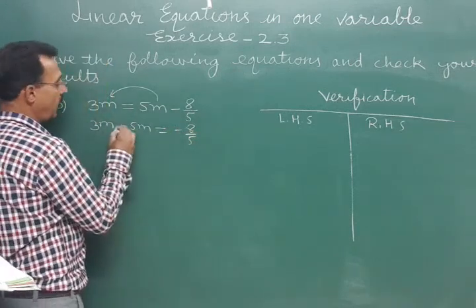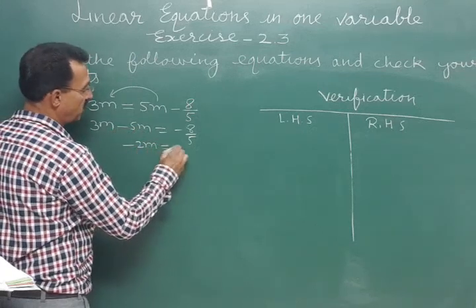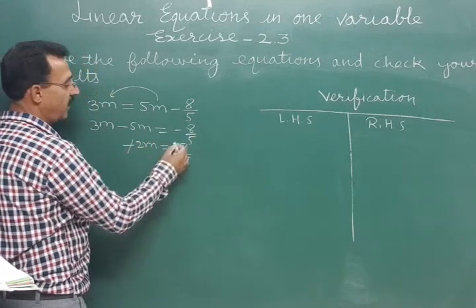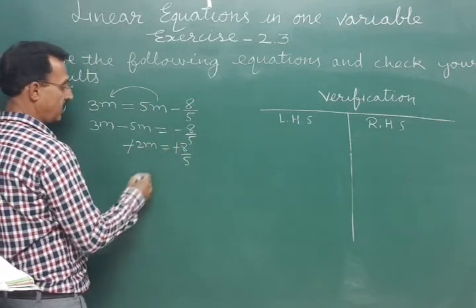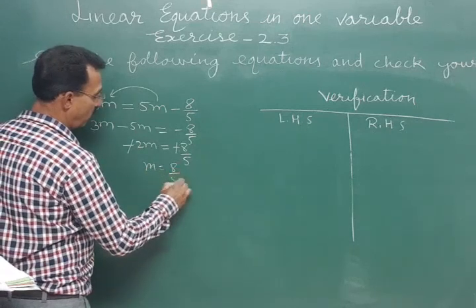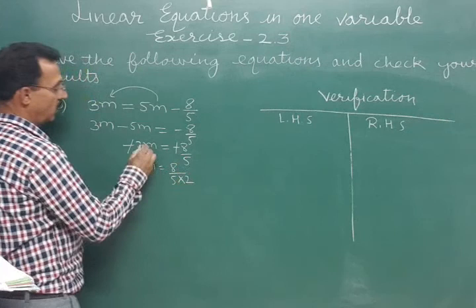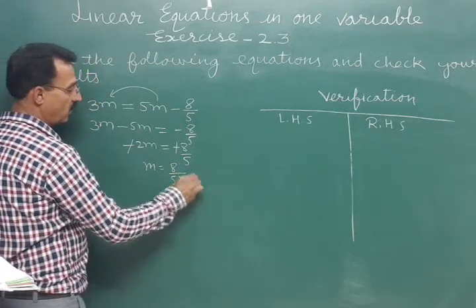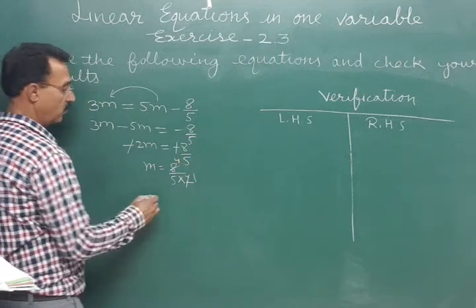So 3m minus 5m is minus 2m is equal to minus 8 upon 5. Minus on the left side, minus on the right side, so m is equal to 8 upon 5 into 2. So 2 and 8, that's 4.